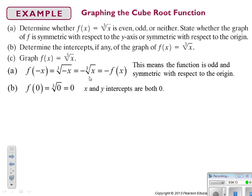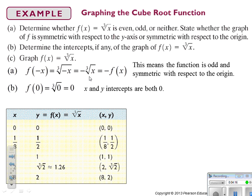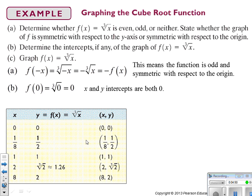We're going to graph this function. The best thing to do is take values that have a perfect cube root, because other values give messy decimals. The values chosen are 0, 1/8, 1, 2 (a funky cube root value), and 8. So on our graph we plot (0,0), (1/8, 1/2), (1,1), (2, 1.26), and (8, 2).